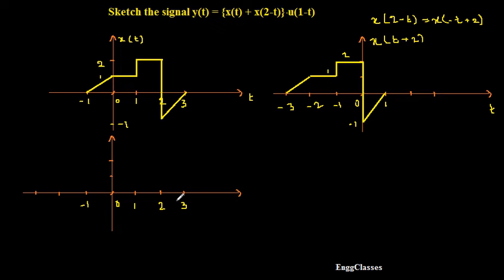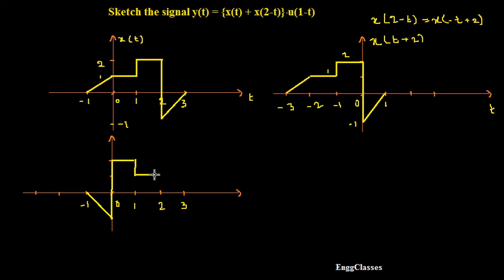This is what I am sketching now. The signal is exactly the reflected version along the vertical axis. From 0 onwards it goes up to the amplitude of 2. From 0 to 1 the amplitude remains 2, after that it becomes 1 and stays 1 till 2. From 2 to 3 it decreases and becomes 0. I call this the reflected version of X of t plus 2, which is X of 2 minus t. This amplitude is 2, this is 1, this is minus 1.